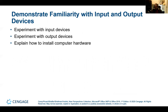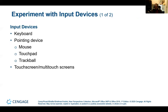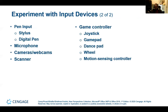Some of the input devices you have include the keyboard, a pointing device such as a mouse, touchpad, or trackball, and touchscreens and multi-touchscreens. Additional input devices include a pen or stylus, a digital pen, a microphone, cameras and webcams, scanners, and game controllers such as joysticks, game pads, dance pads, wheels, and motion sensing controllers. There are all kinds of devices that you can have as inputs.